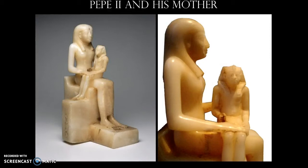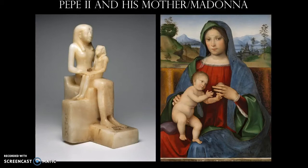Pepe II and his mother is one of those great sculptures, but much smaller than the previous ones — the sculpture of Khafre is five and a half feet, whereas this one is only about 16 inches tall. It's made out of alabaster. What's great about Pepe II and his mother is that it looks very much like a Madonna and child painting. The child wears the royal headdress and kilt, and the sculpture pays homage to the queen who is acting as regent until her son is old enough to take over the throne. Here we do have some negative space — particularly between the arm and the body, as well as the legs and the throne.